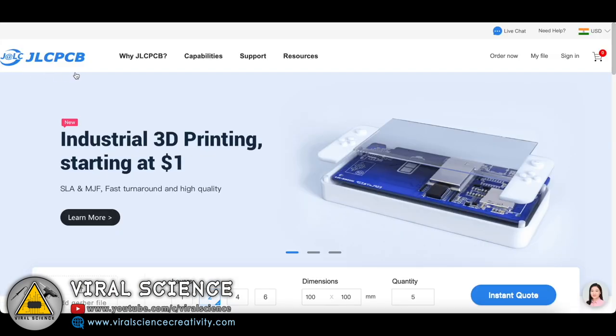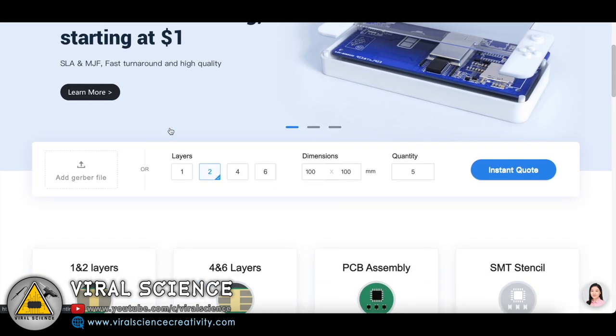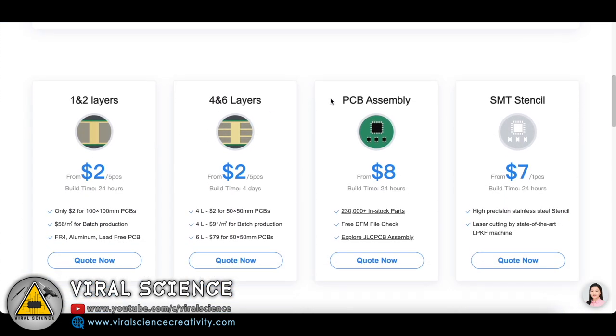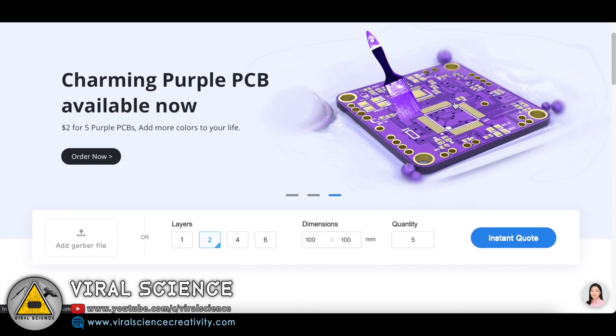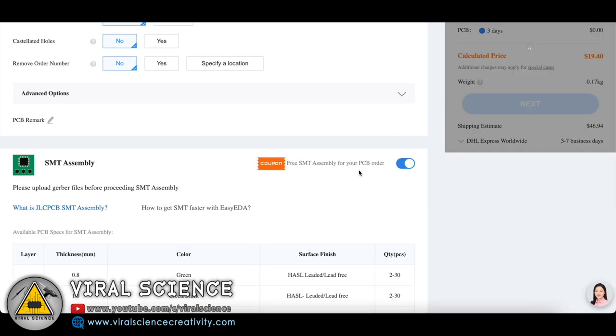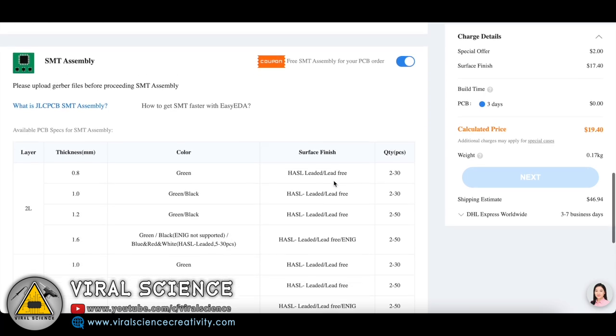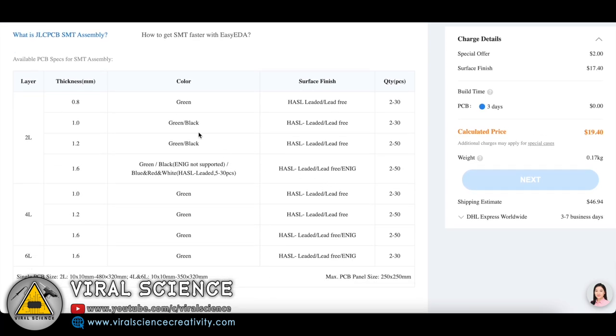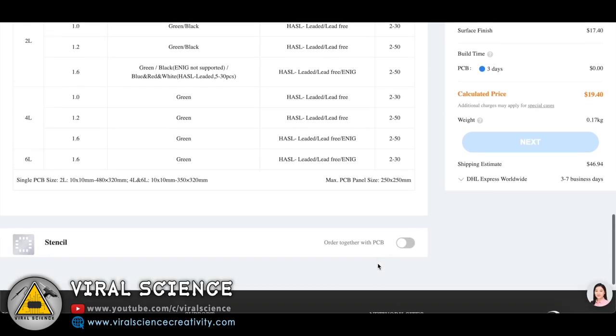This video is sponsored by JLCPCB. JLCPCB is a good quality PCB manufacturing company and also provides SMT assembly services. It holds more than 200,000 in stock components and provides low cost PCB assembly services in very less time. For discount in prices you can use the coupon codes added in your accounts for new users and SMT assembly services. I've provided links in the description so you can start ordering your PCBs.